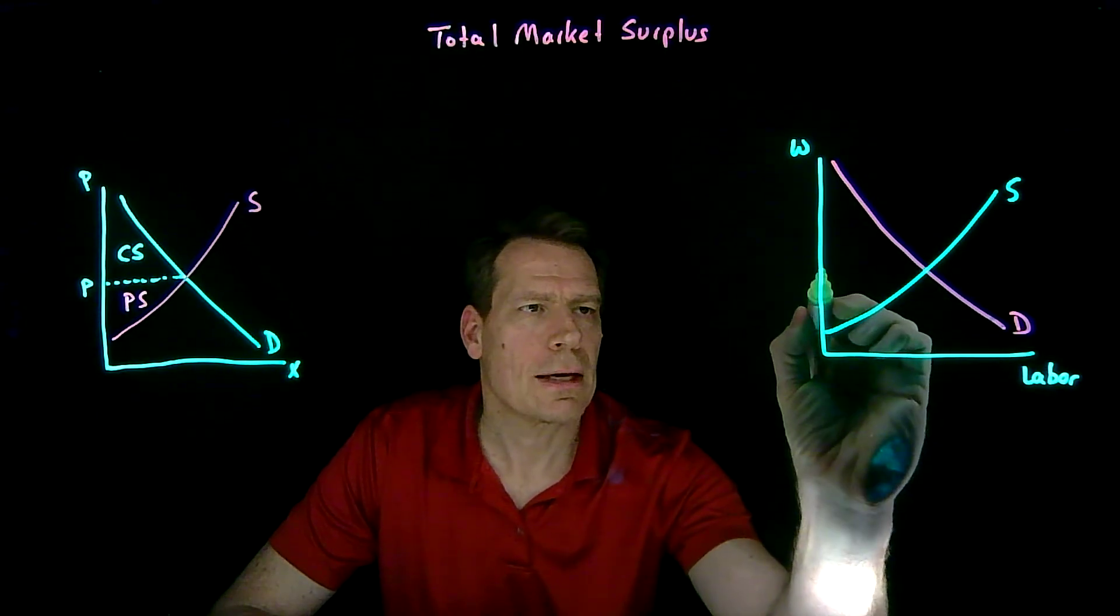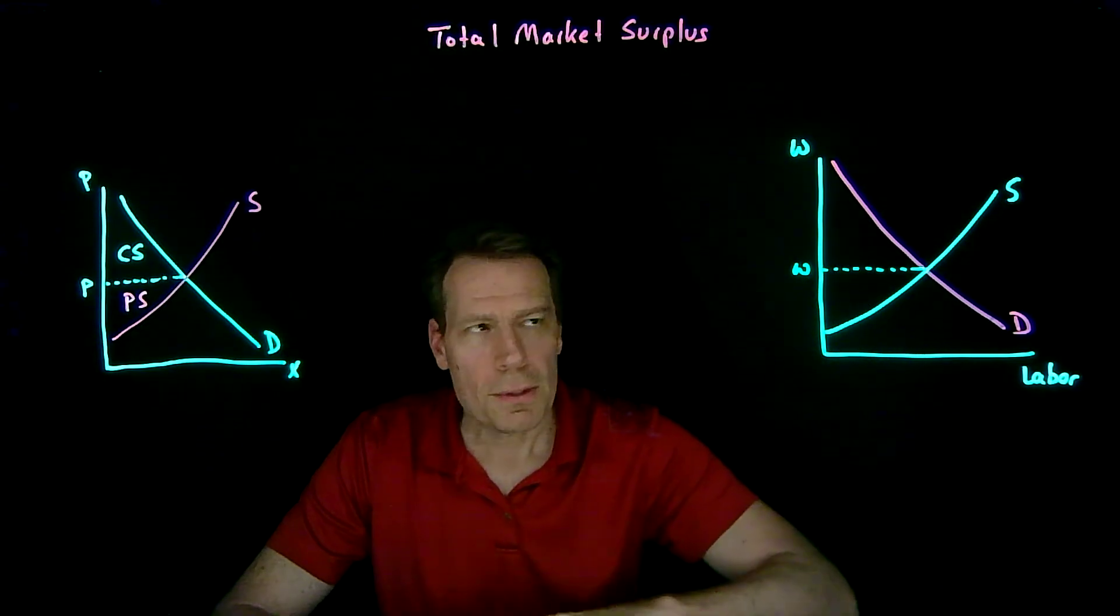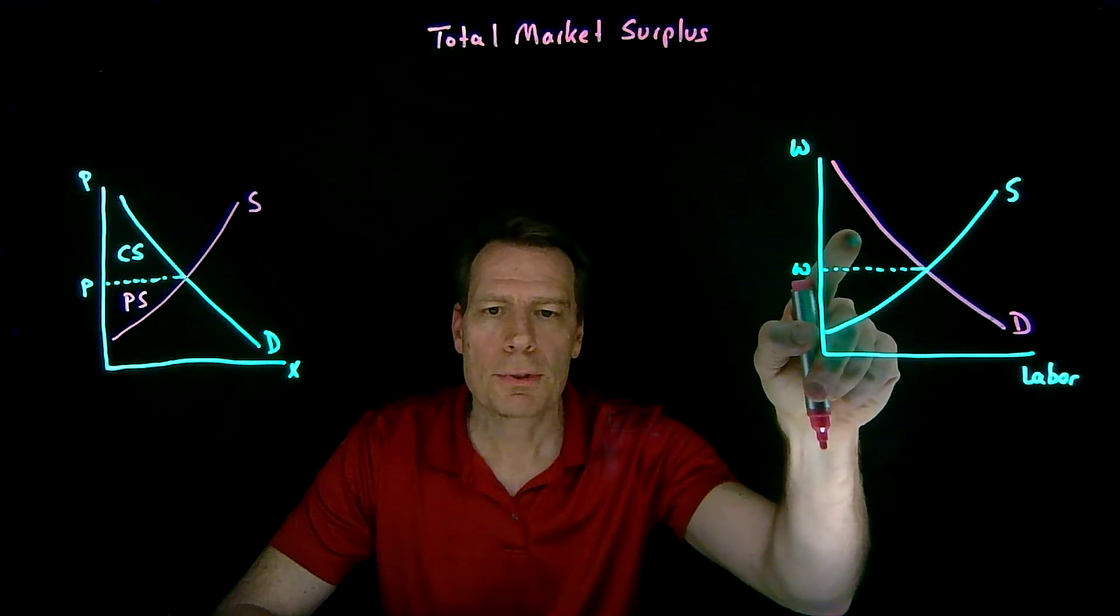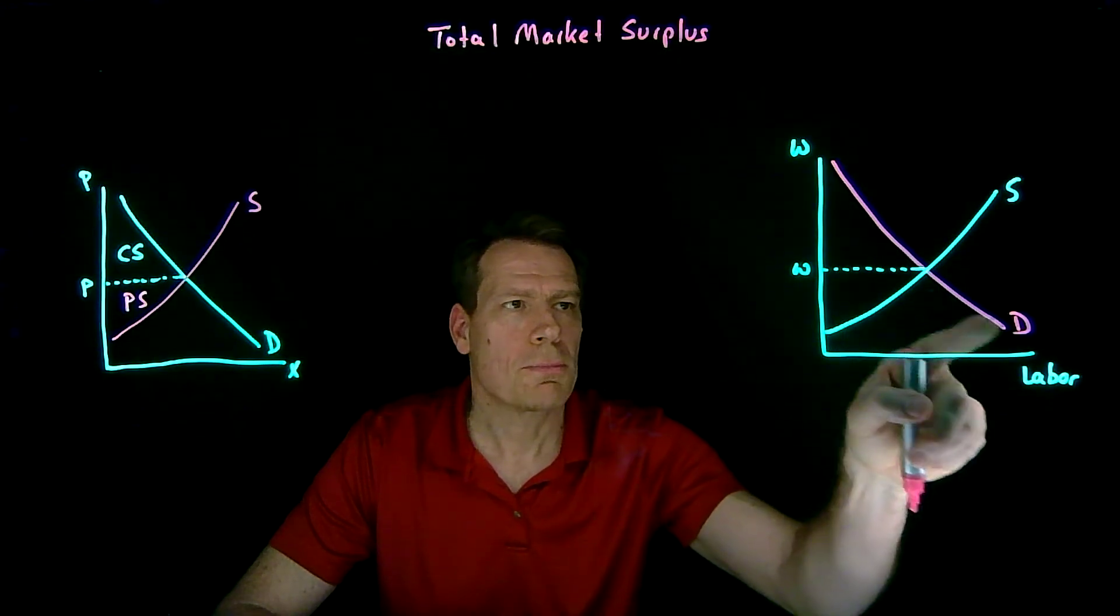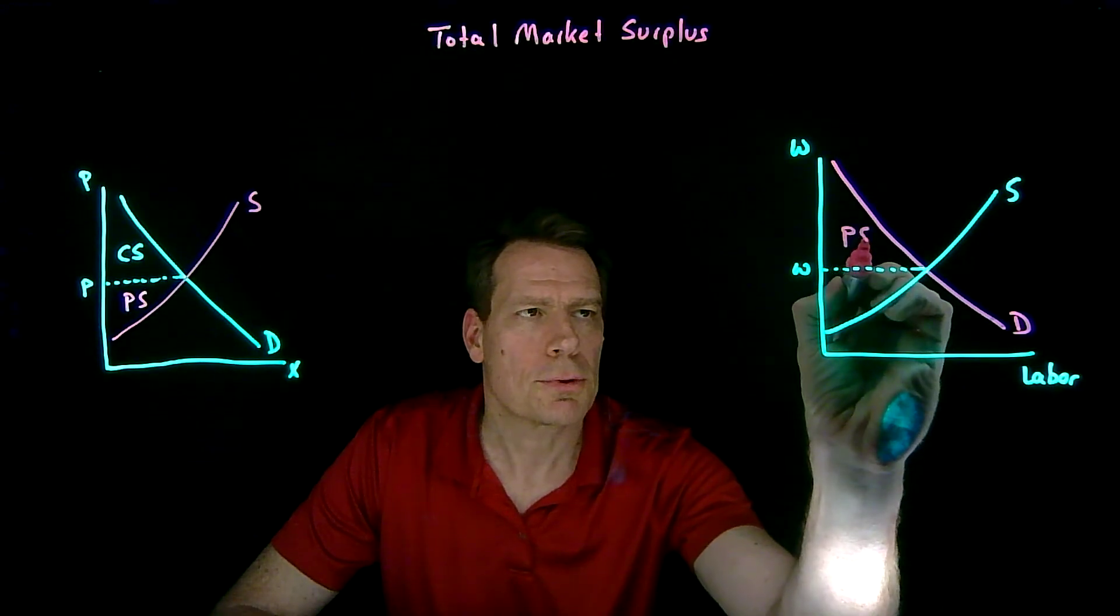Together, those create an equilibrium wage. With the area above that wage up to the demand curve being producer surplus, because firms are the ones who are demanding labor. So this would become producer surplus.